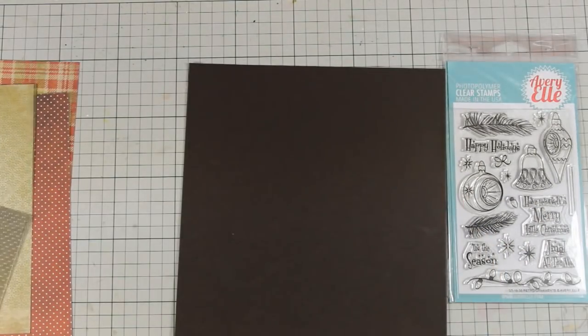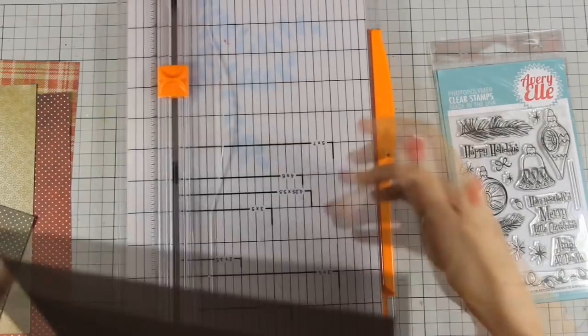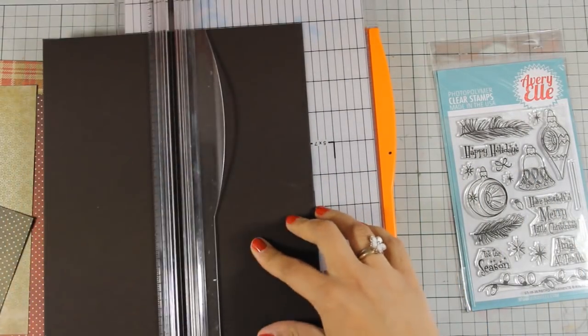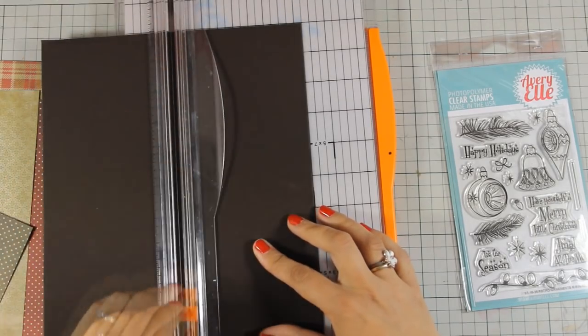So I have chosen a few and I am going to create my card base out of this dark chocolate cardstock. So I'm going to cut it and fold it to be a standard card that's four and a quarter by five and a half.